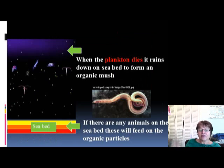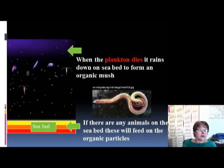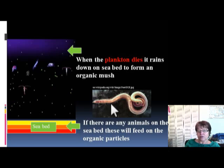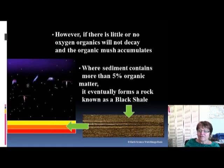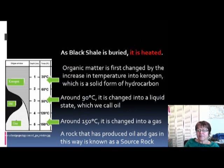When these organisms die, they rain down to the bottom of the sea where the oxygen amount is very limited, so they can't fully decay. Any creatures on the bottom will feed on this organic material, but on the long term, this organic material just piles up and gets covered by other sediment. Through time, the temperature starts to increase.